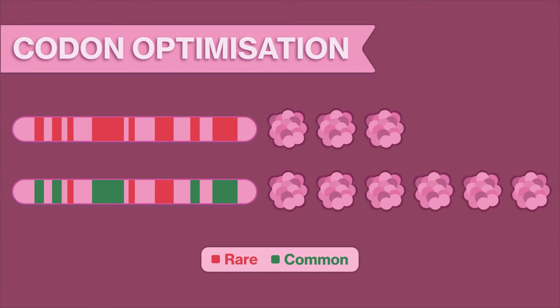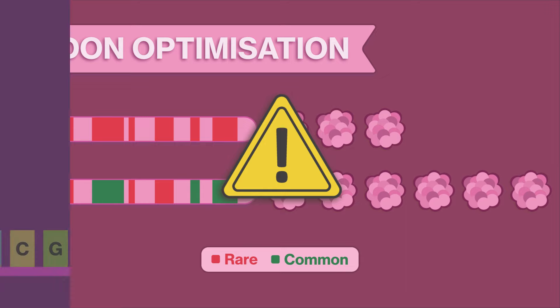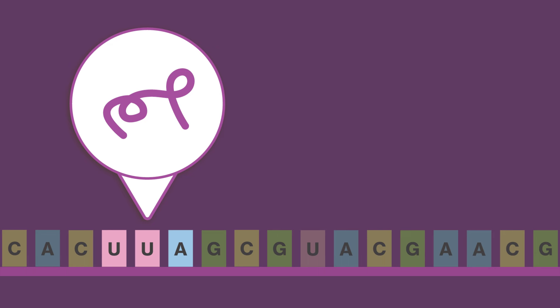However, replacing rare codons with common ones may not be as perfect as it seems. Rare codons are believed to play an important role in regulating polypeptide folding and secretion.